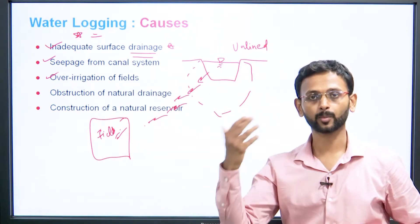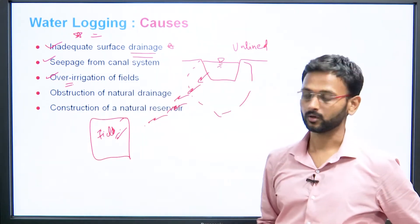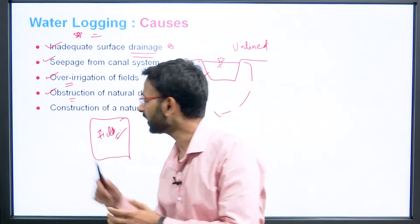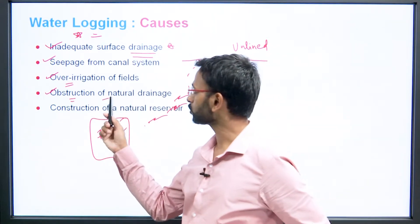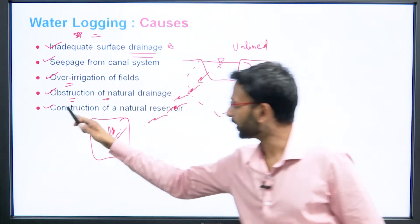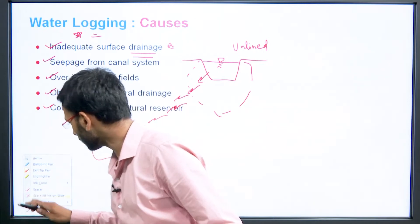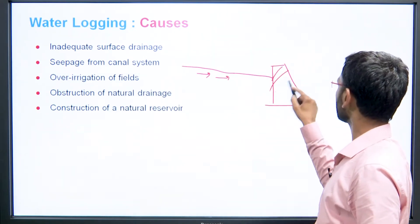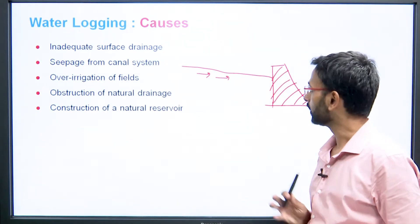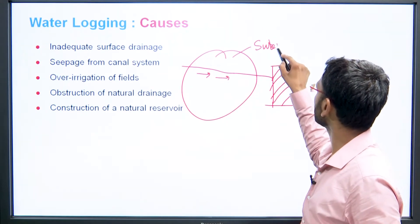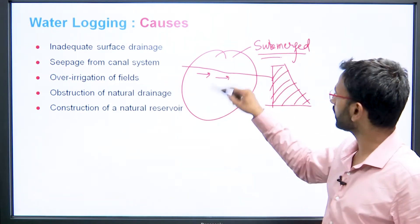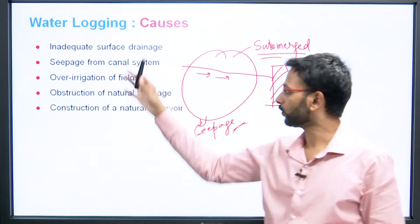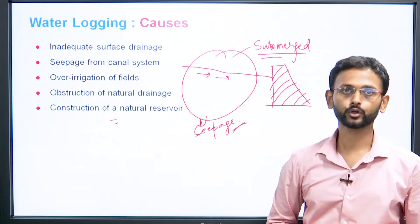Fourth cause is excess rainfall. Fifth is obstruction of natural drainage — if a natural water flow path is obstructed by something, it leads to water logging. Sixth is construction of a reservoir or dam. If a stream is flowing and an obstruction is constructed, the area behind it gets submerged, leading to seepage and water logging problems due to excess water and drainage issues.